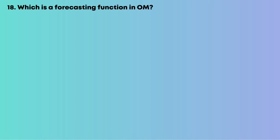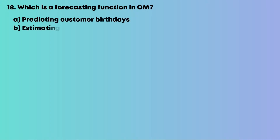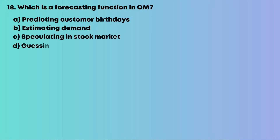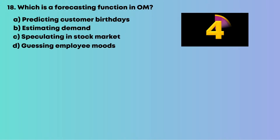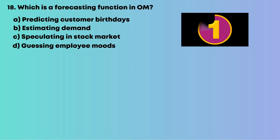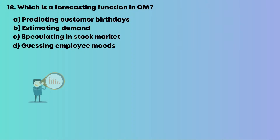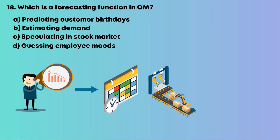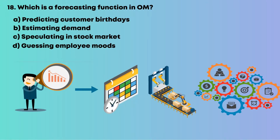Question 18: Which is a forecasting function in operations management? Options are: A, predicting customer birthdays; B, estimating demand; C, speculating in stock market; D, guessing employee moods. Forecasting helps plan production and resources. The right answer is B, estimating demand.